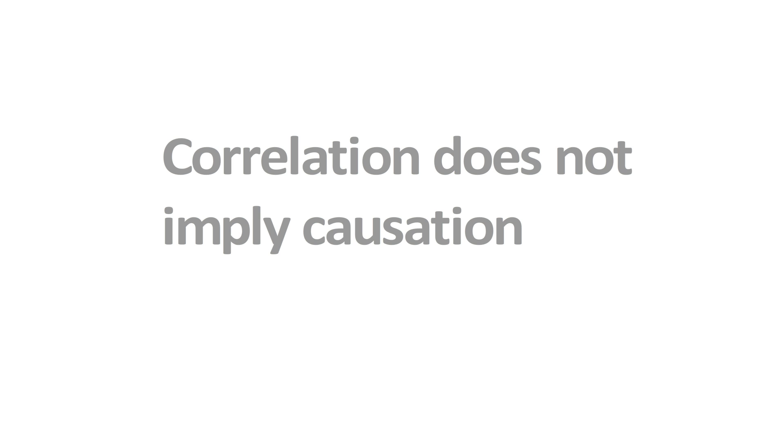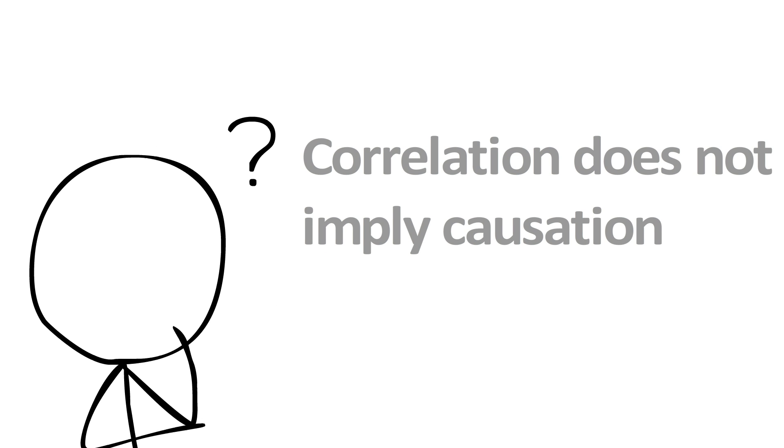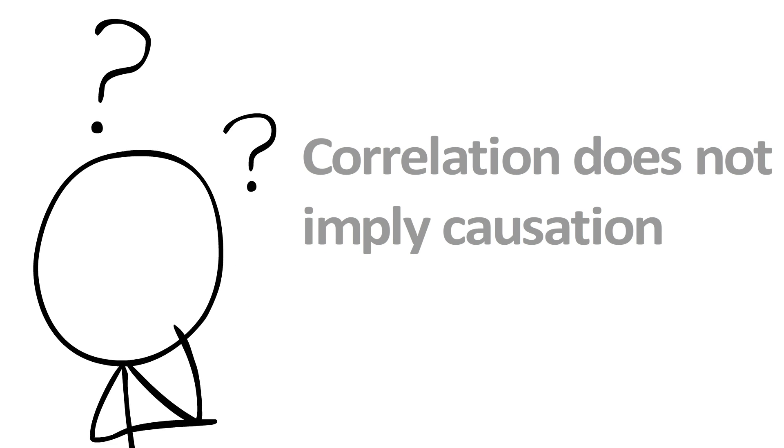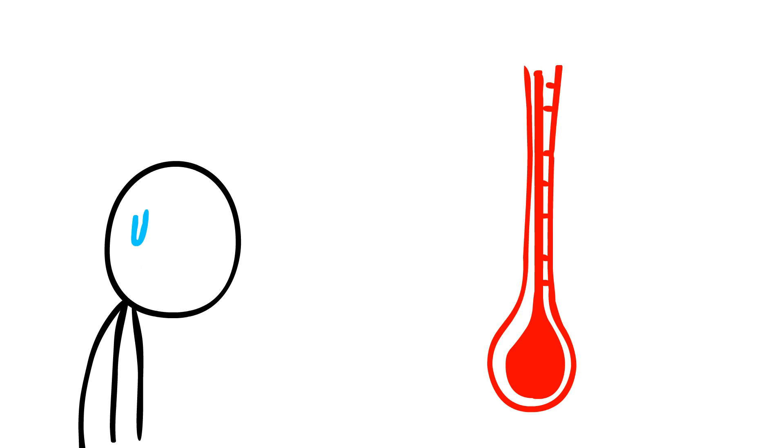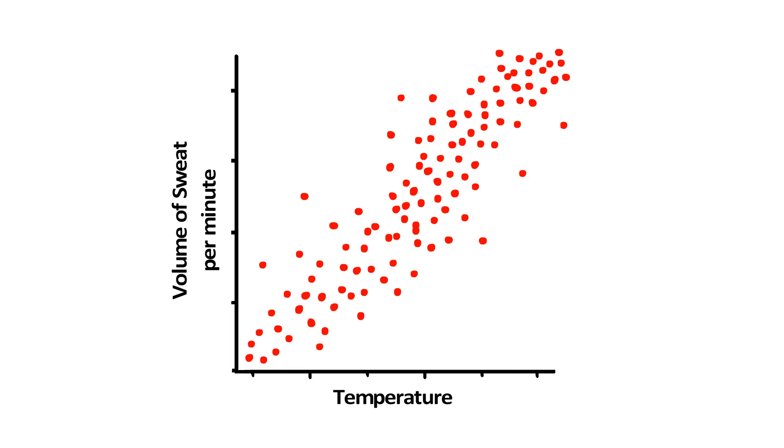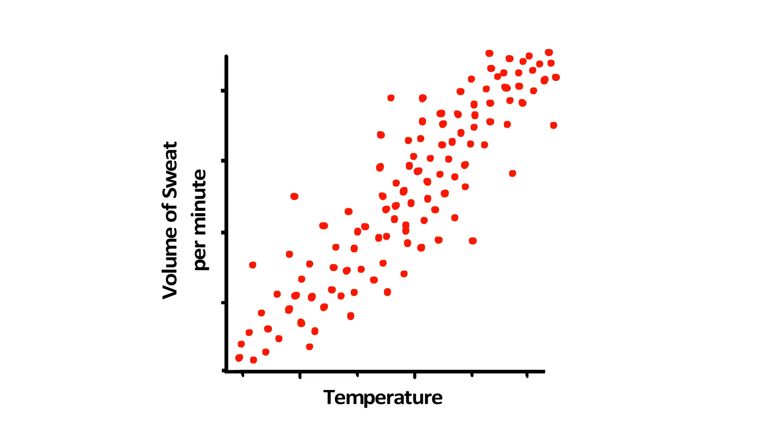And that something would be that correlation does not imply causation. This is a phrase you might have heard before, but might not be entirely sure what it means. Here's what I'm talking about. Let's take the example of people sweating more, on average, when the average room temperature increases. We can clearly see that these two variables are related, since when one is at a higher value, usually so is the other.